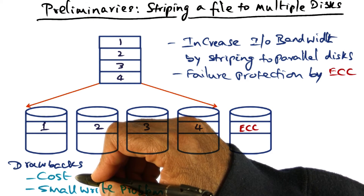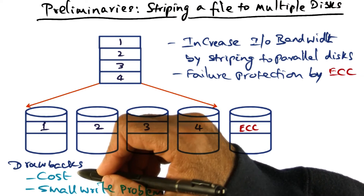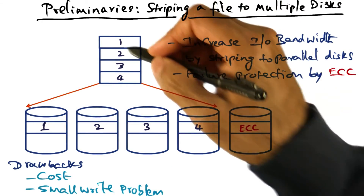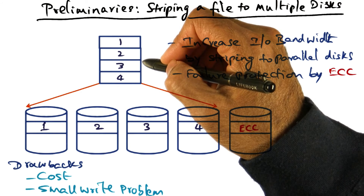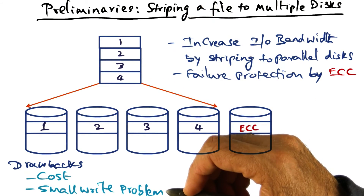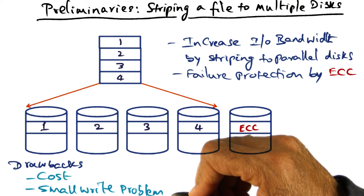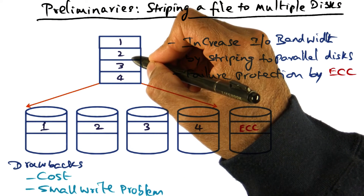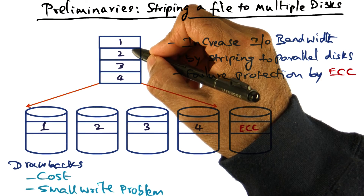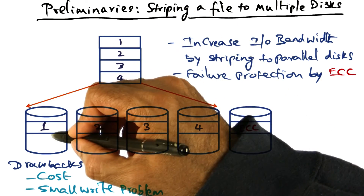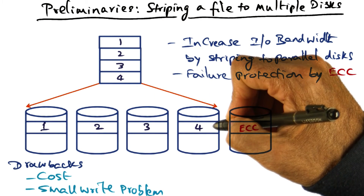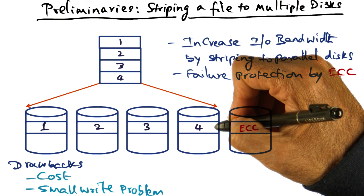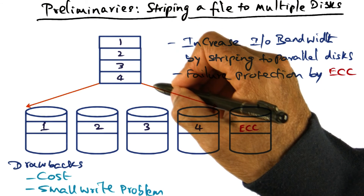The drawback in the RAID technology is, first of all, the cost — the fact that we have to have multiple hardware drives in order to store a single file. The second problem is what is called the small write problem. That is, if my file is really, really small, then a part of this file is going to be written on each one of these disks, and that's inefficient in terms of how you store data.